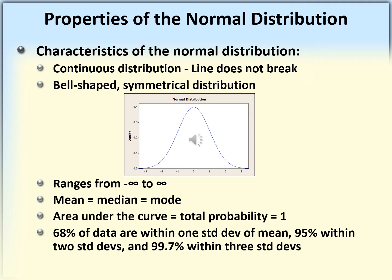Within three standard deviations from the mean — from mu minus three sigma to mu plus three sigma — we have 99.7 percent of the total area. That means only 0.3 percent lies on either side beyond three standard deviations: 0.15 percent to the left of mu minus three sigma, and 0.15 percent to the right of mu plus three sigma.